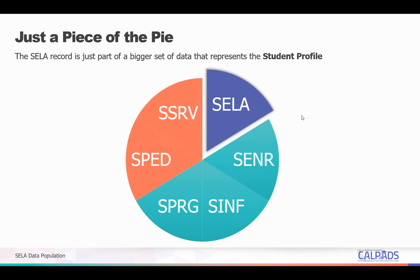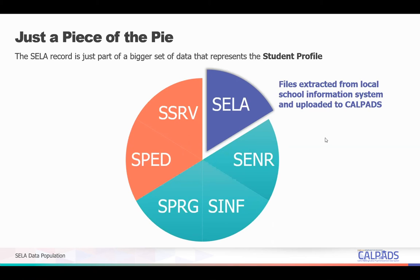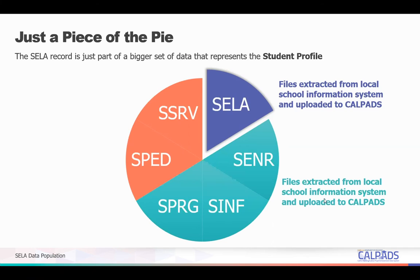For students with disability, they should also be reported with the student special education record and the student special education services record. Both the CELA, SCNR, SINF, and SPRG files are extracted from the local school information system and uploaded to CALPADS. On the other hand, the SPED and SSRV files come from the local SEDS system, which is pushed to CALPADS through the API.